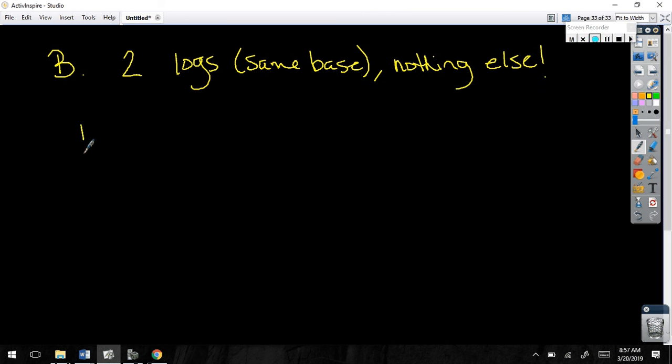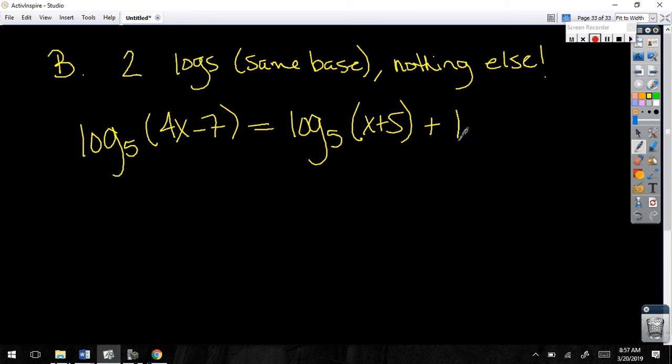For example, log base 5 of 4x minus 7 equals log base 5 of x plus 5. There is not. I thought there is nothing else. There is not. Two logs. What is in parentheses after the log still goes with the log. Oh. What I mean is there is not this. Wait. Wait. Wait. Can I guess what we did? Sure. Do you set the 4x minus 7 x plus 5 together and then you just solve for that? Yes.